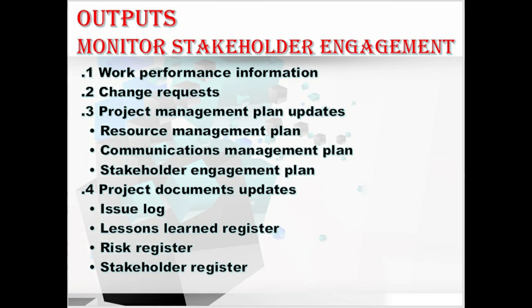Let's move to the outputs, starting with work performance information. This may include information about the status of stakeholder engagement, such as the level of current project support compared to the desired levels of engagement as defined in the stakeholder engagement assessment matrix, the stakeholder cube, or other tools. The next output is change requests — corrective and preventive actions to improve the current level of stakeholder engagement must go through the perform integrated change control process.